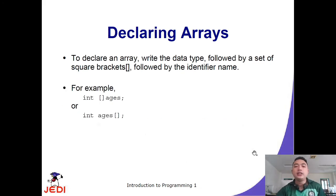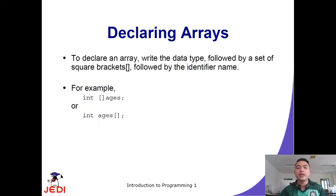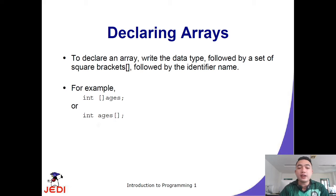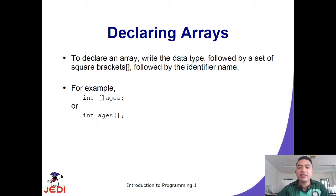Each slot in the array is addressed by what we call an index — indexed 0, 1, 2, and so on. To declare an array, you write the data type followed by a set of square brackets, then followed by the identifier. For example: int[] ages — or alternatively, int ages[] where the square brackets come after the identifier name.